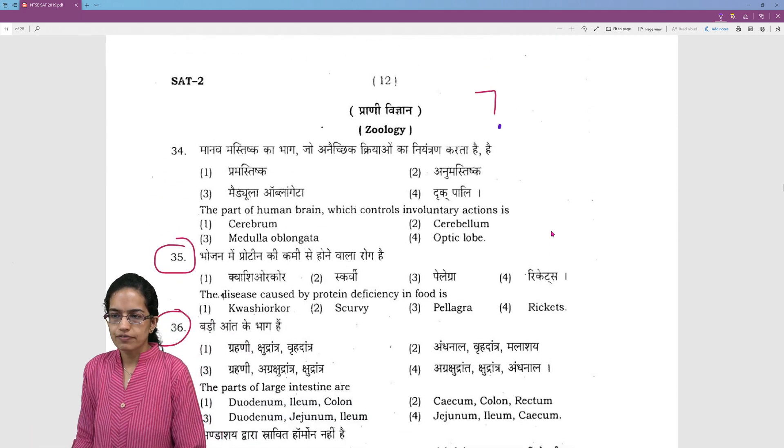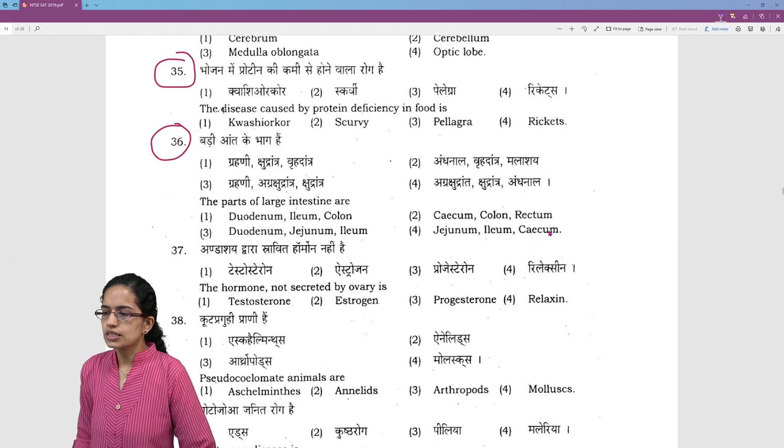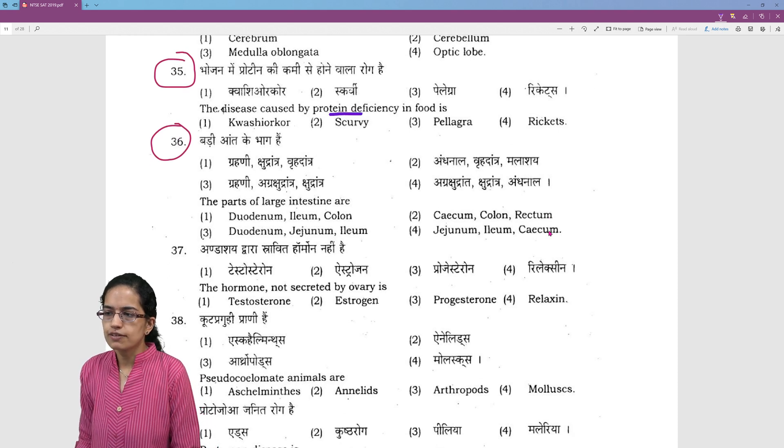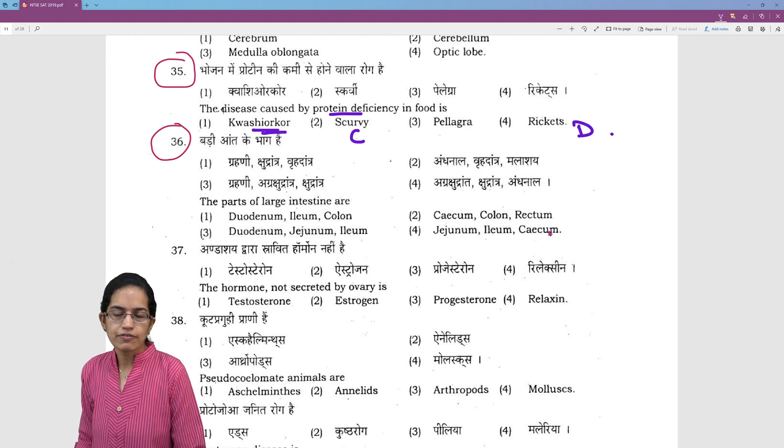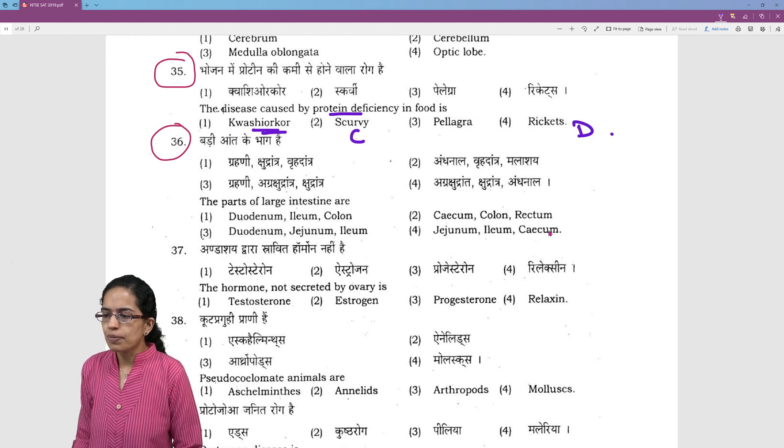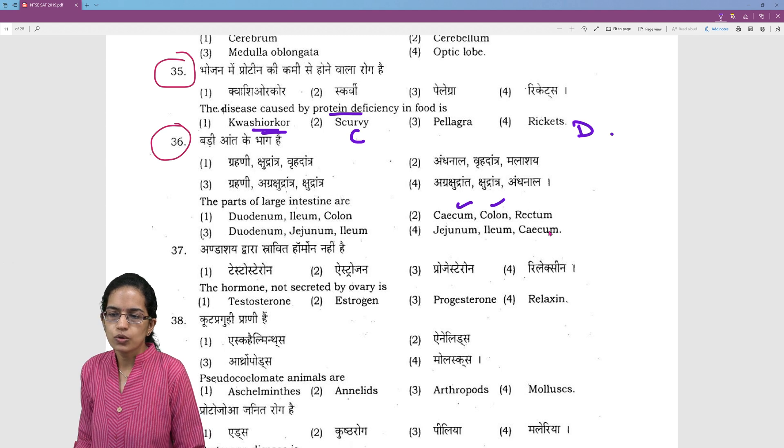In Zoology we had 7 questions that were asked. Questions like diseases caused by protein deficiency is kwashiorkor, scurvy is because of deficiency of vitamin C, rickets by vitamin D deficiency. Then parts of intestine are caecum, colon and rectum.